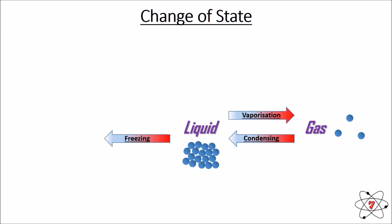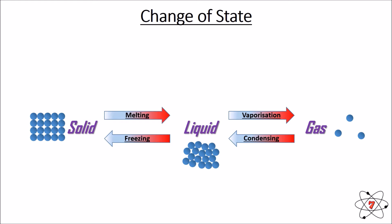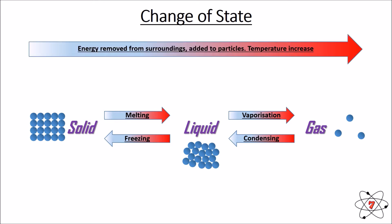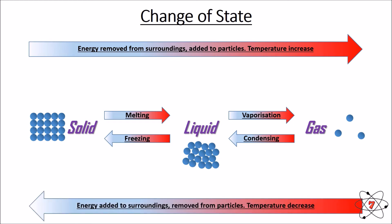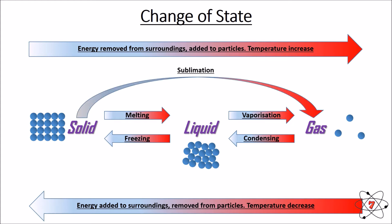If we cool that liquid down even further it loses even more energy, freezes, and becomes a solid. If we heat our solid up again, giving it more energy, the solid will melt and become a liquid again. So, a liquid cooled down will freeze; heated up it will become a gas. Energy removed from the surroundings and added to particles causes a temperature increase — solid to liquid to gas. Energy added to the surroundings and removed from particles gives a temperature decrease — gas to liquid to solid.